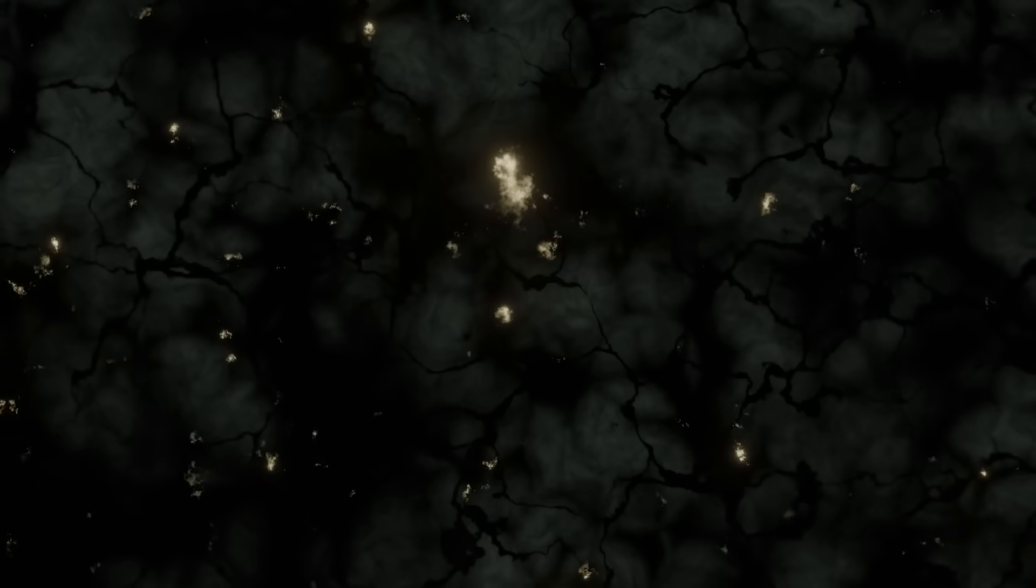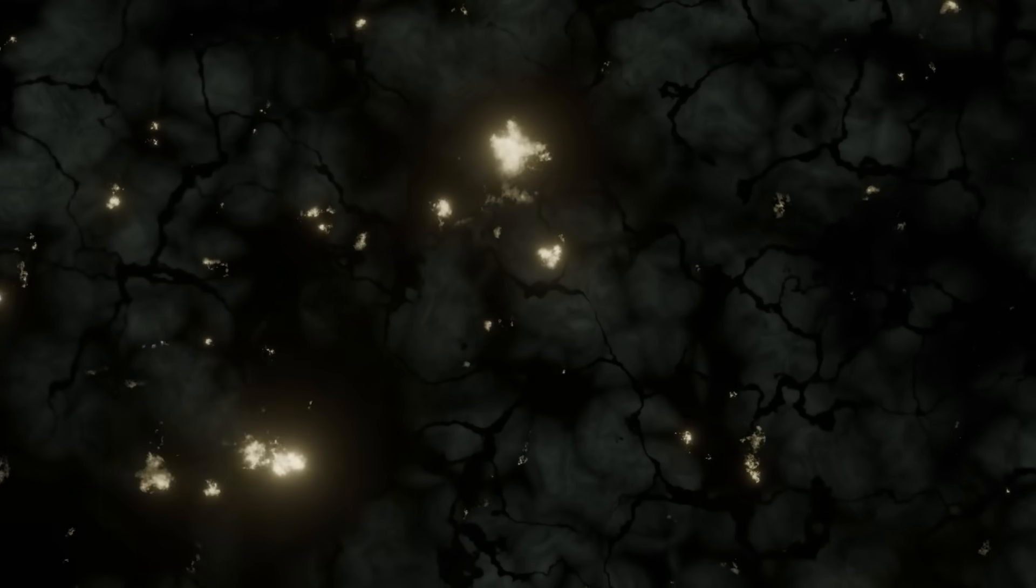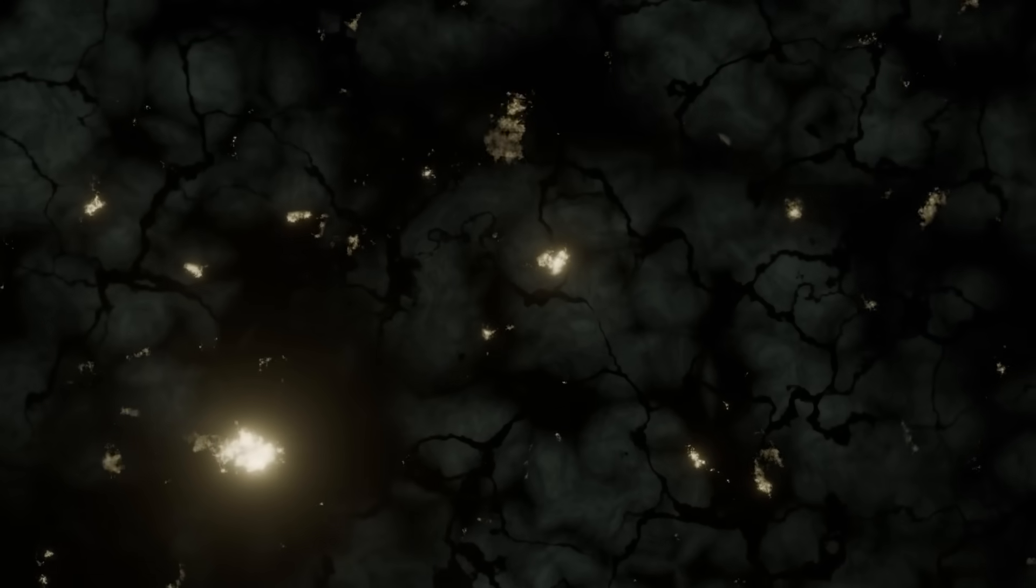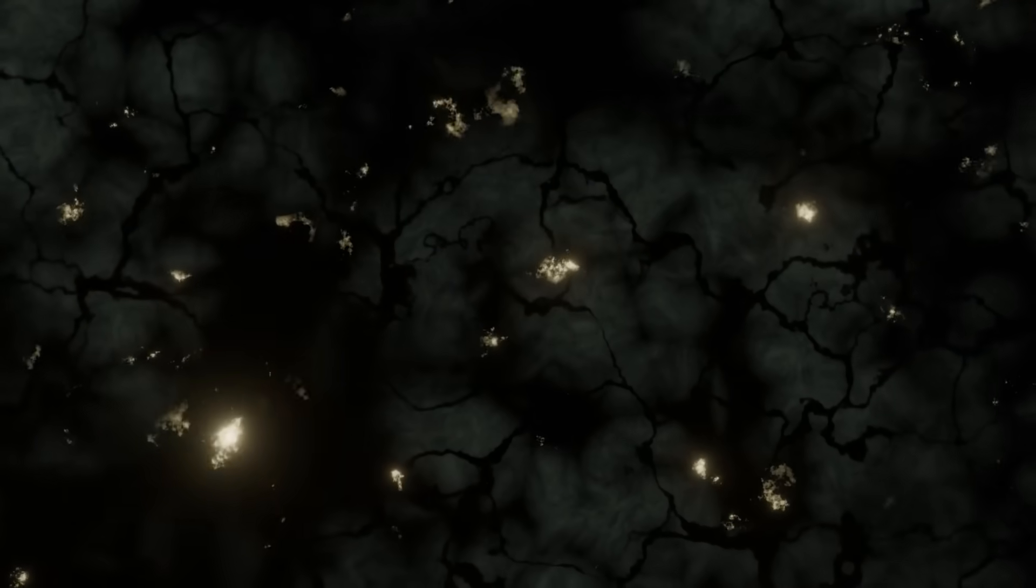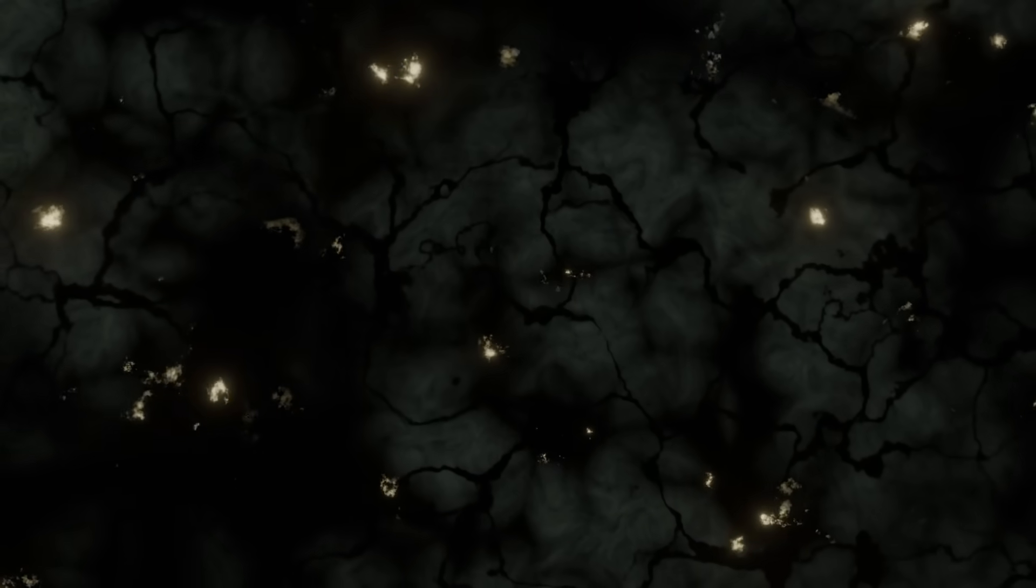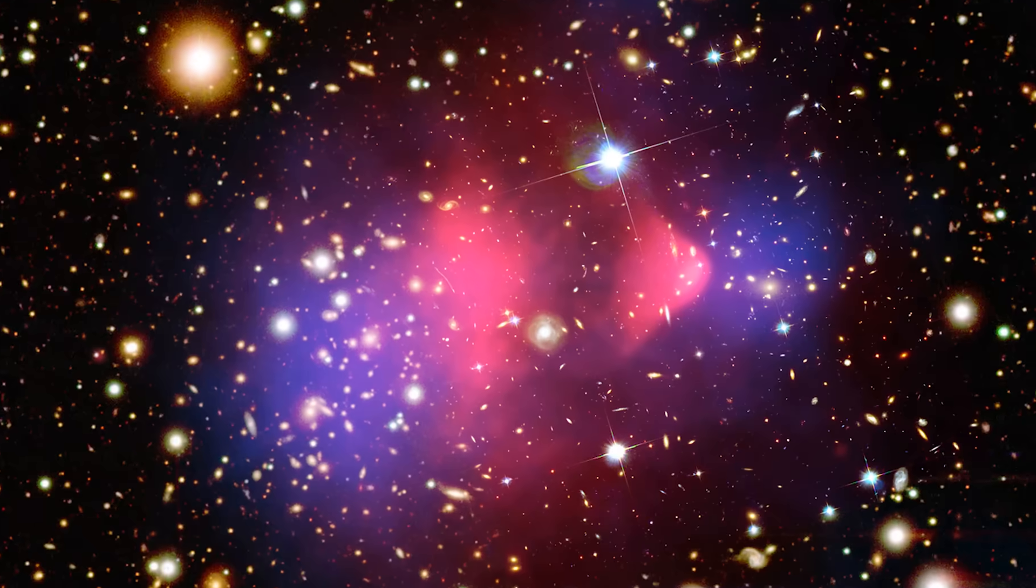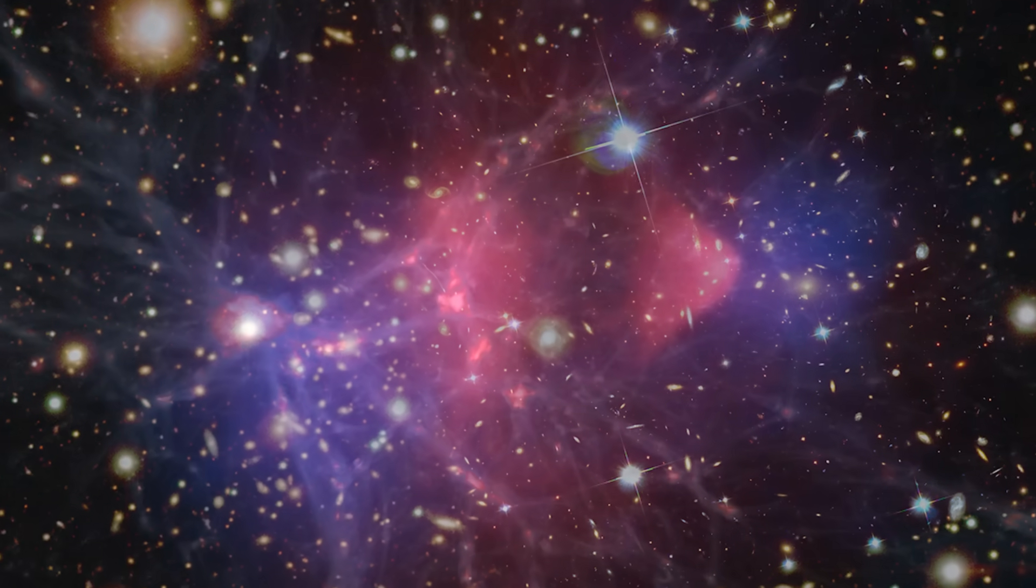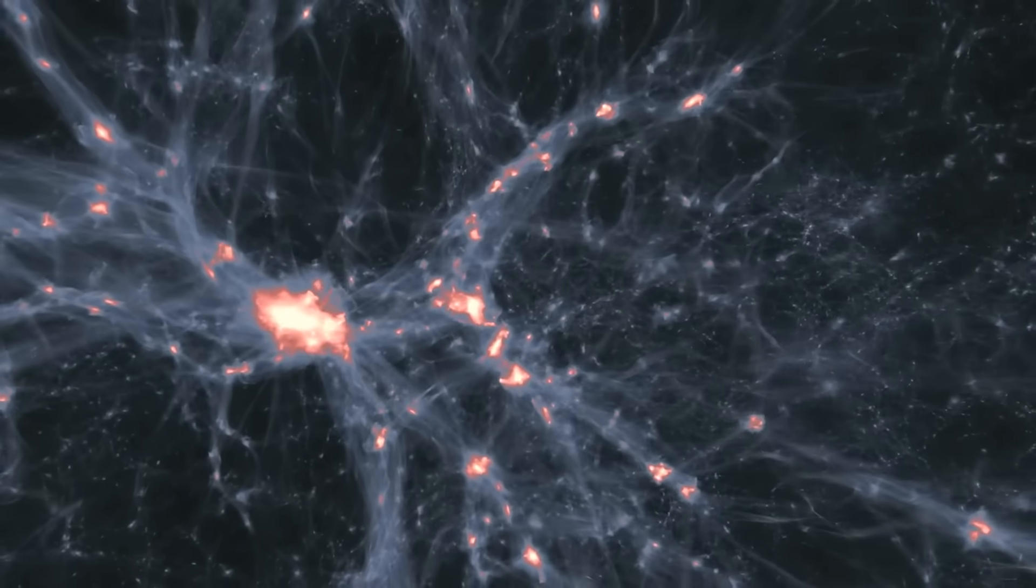Dark matter makes up about 27% of the cosmos. It doesn't emit, absorb, or reflect light, so we can't see it directly, yet we know it's there. Its gravitational pull holds galaxies together and shapes the vast web of cosmic structures.